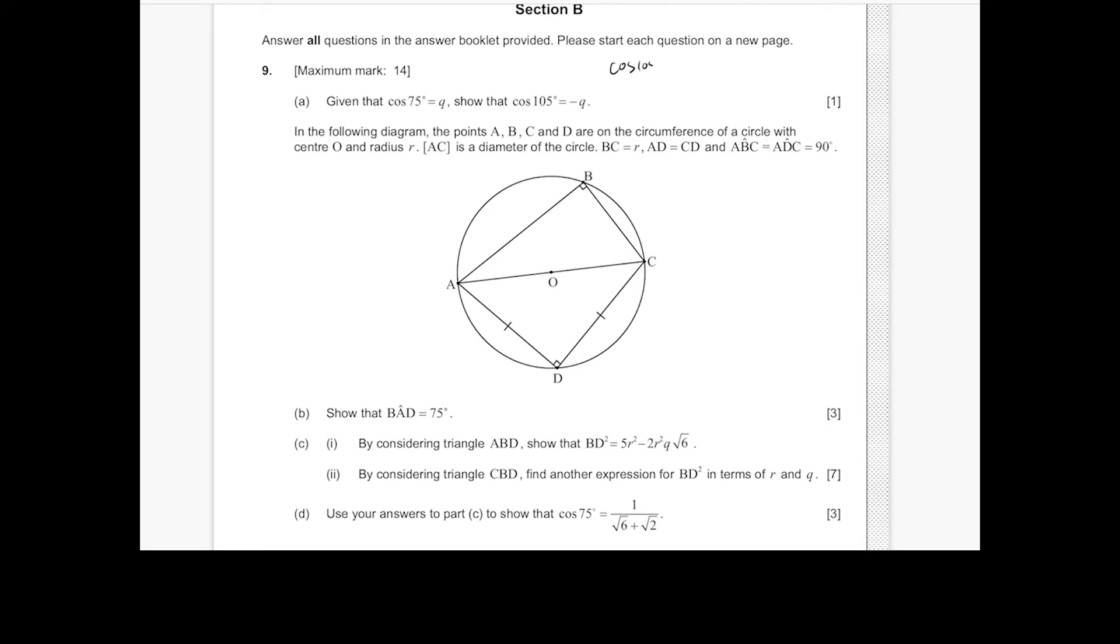So cosine 105 degrees can be expressed as cosine 180 degrees minus 75 degrees. And using the formula in your formula booklet about the subtraction of two angles in cosines, we can write this as cosine 180 degrees times cosine 75 degrees minus sine 180 degrees sine 75 degrees.